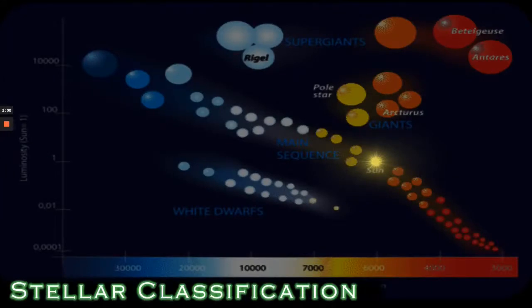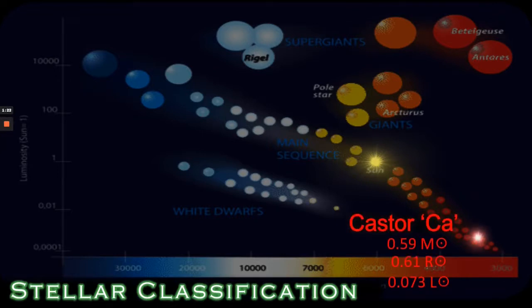What about the classifications of the stars though you might ask? Well we can see here our Sun bang in the middle of the mainstream. Now Castor CA, remember the Castor CA pairing? Well both stars are very similar to around 0.6 solar masses with very small luminosities of just 0.07 solar luminosities and are at the far end of the main sequence.